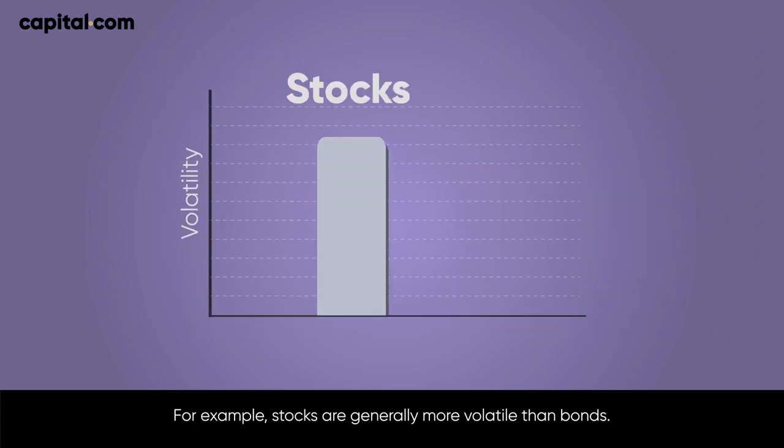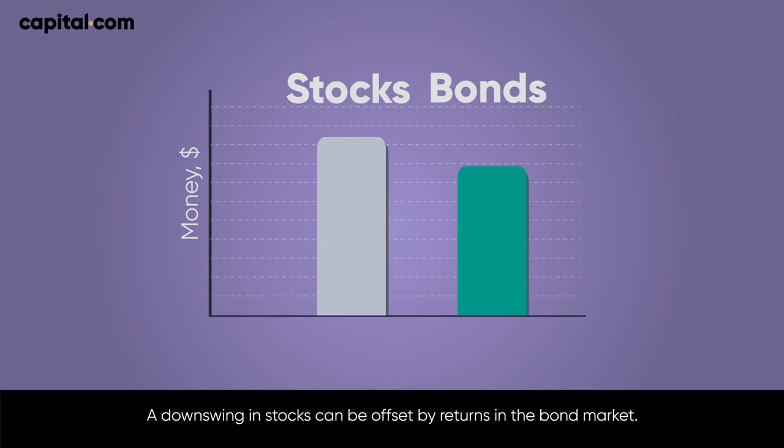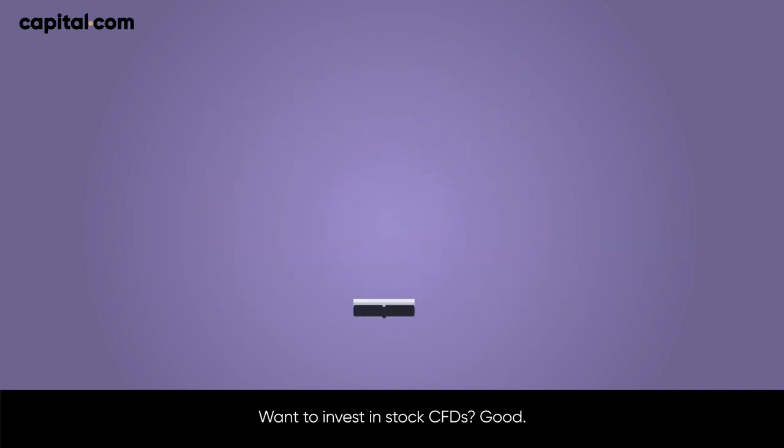For example, stocks are generally more volatile than bonds. A downswing in stocks can be offset by returns in the bond market.